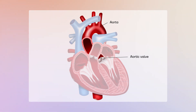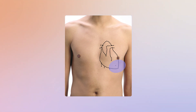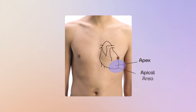Additionally, by placing your hand on the left side of your ribcage just below the nipple, you can often feel your heart beating. This is where the heart apex is located — at the tip of the heart. This area, known as the apical area, is crucial for obtaining specific views during a cardiac ultrasound exam.